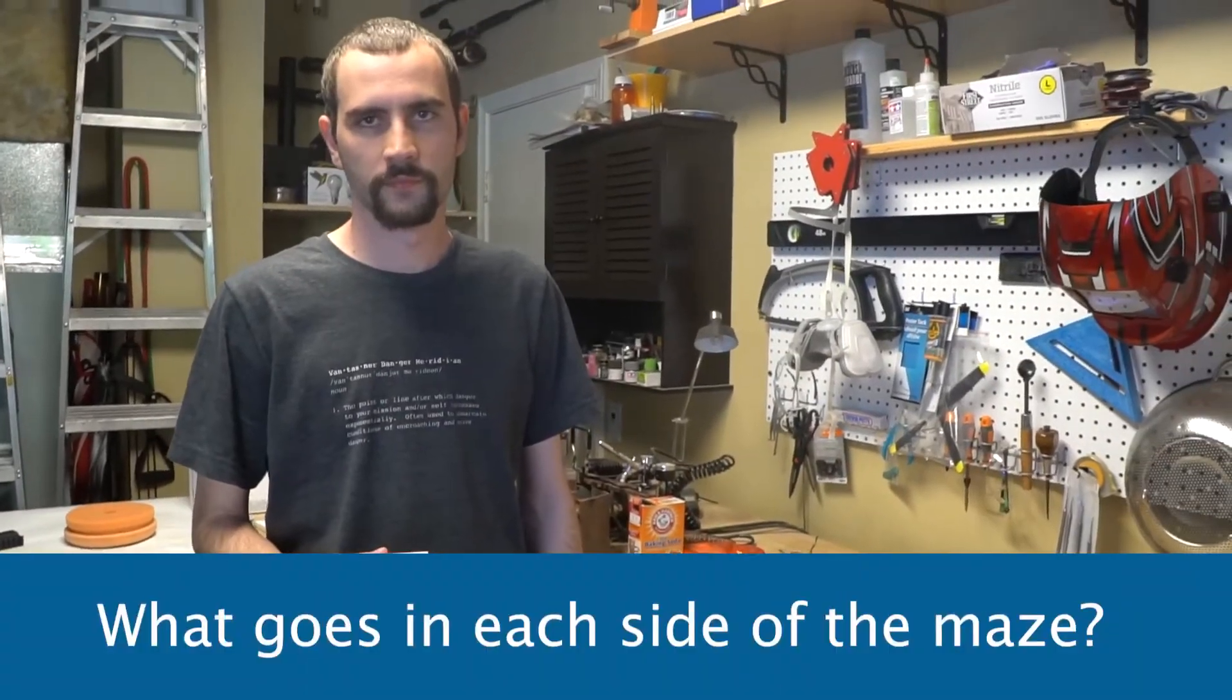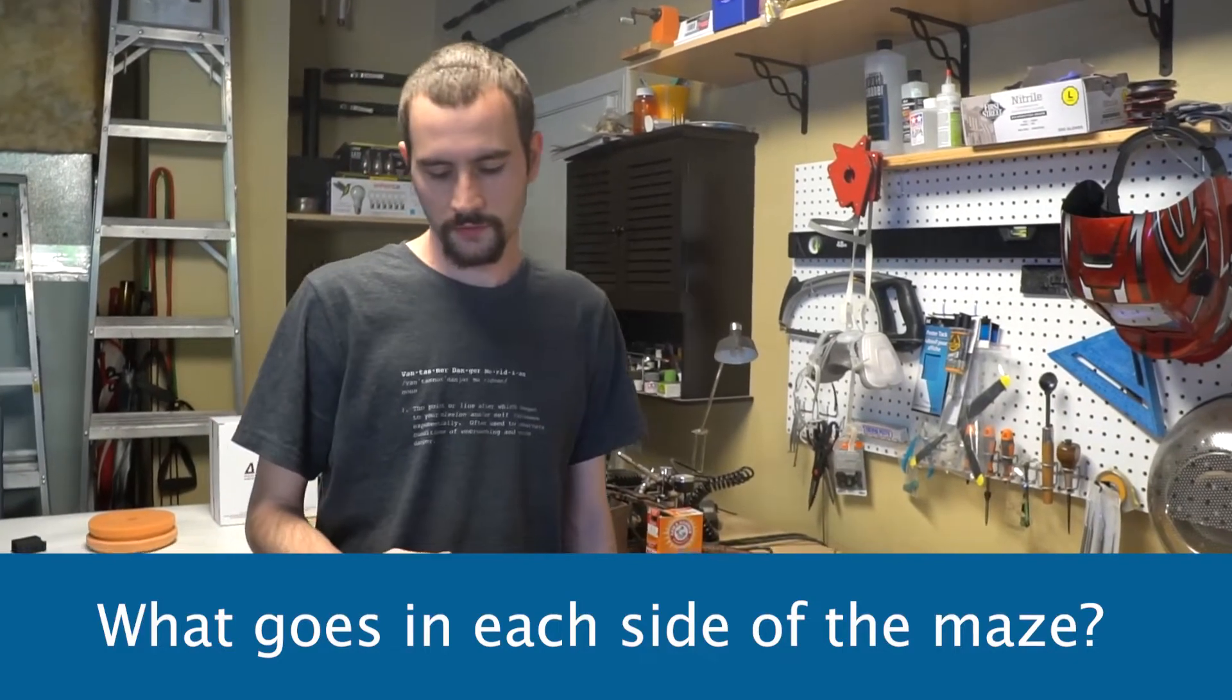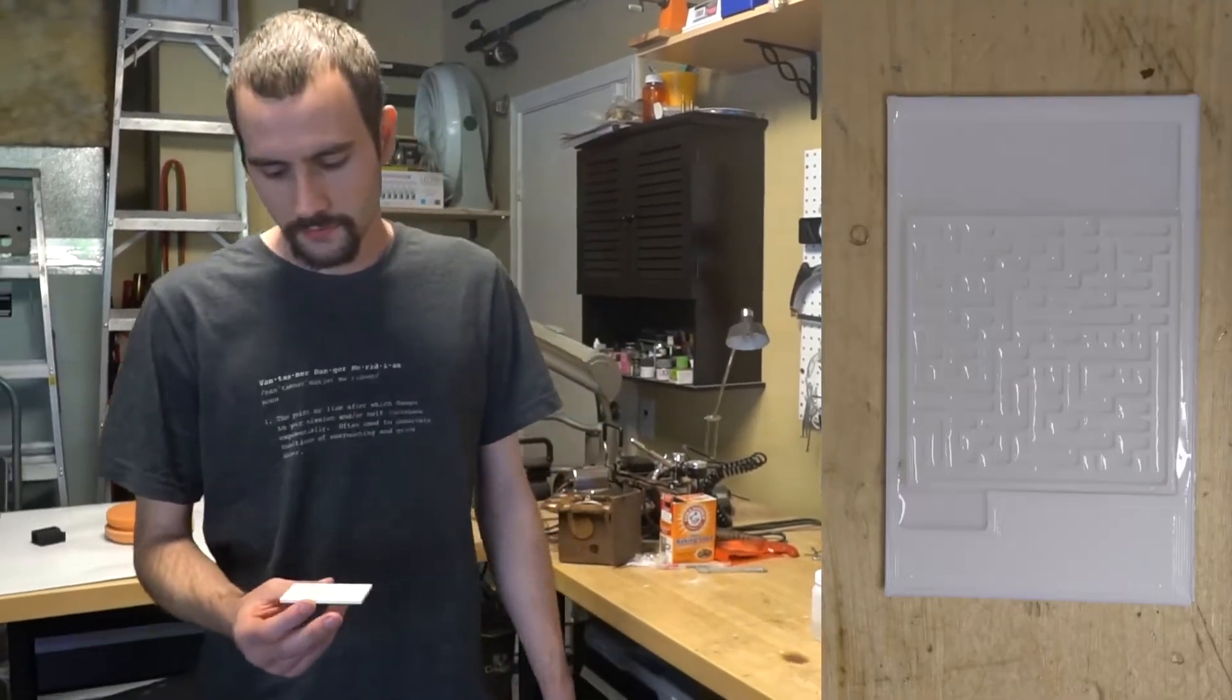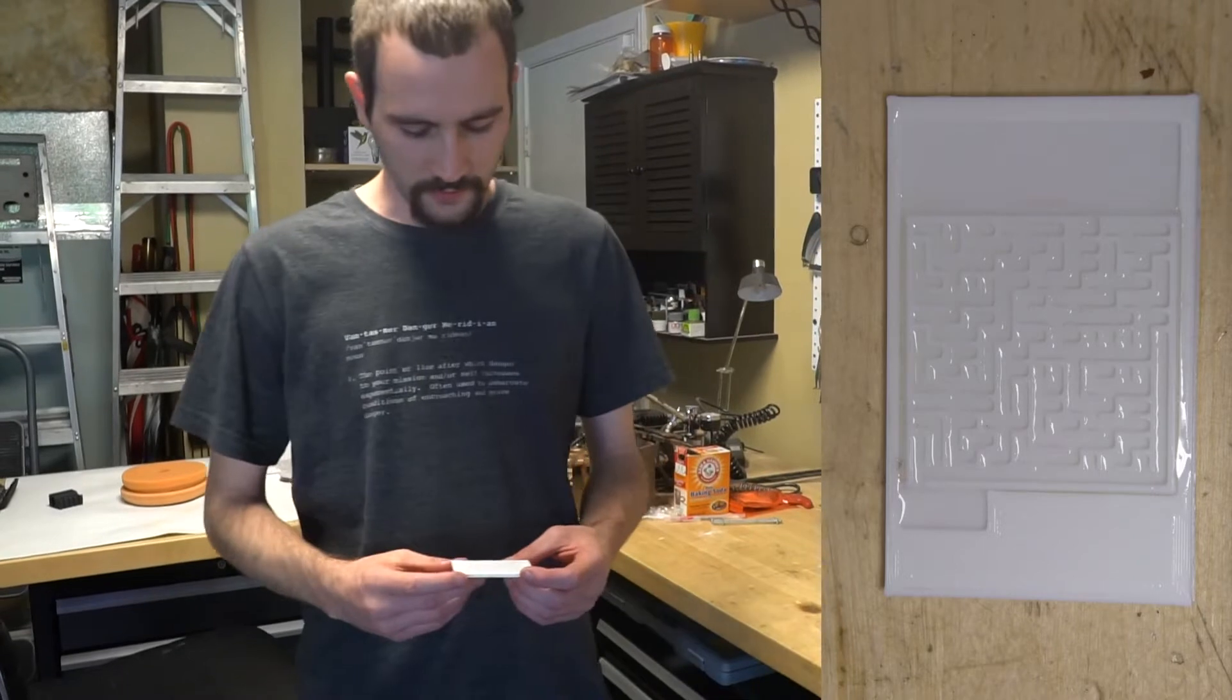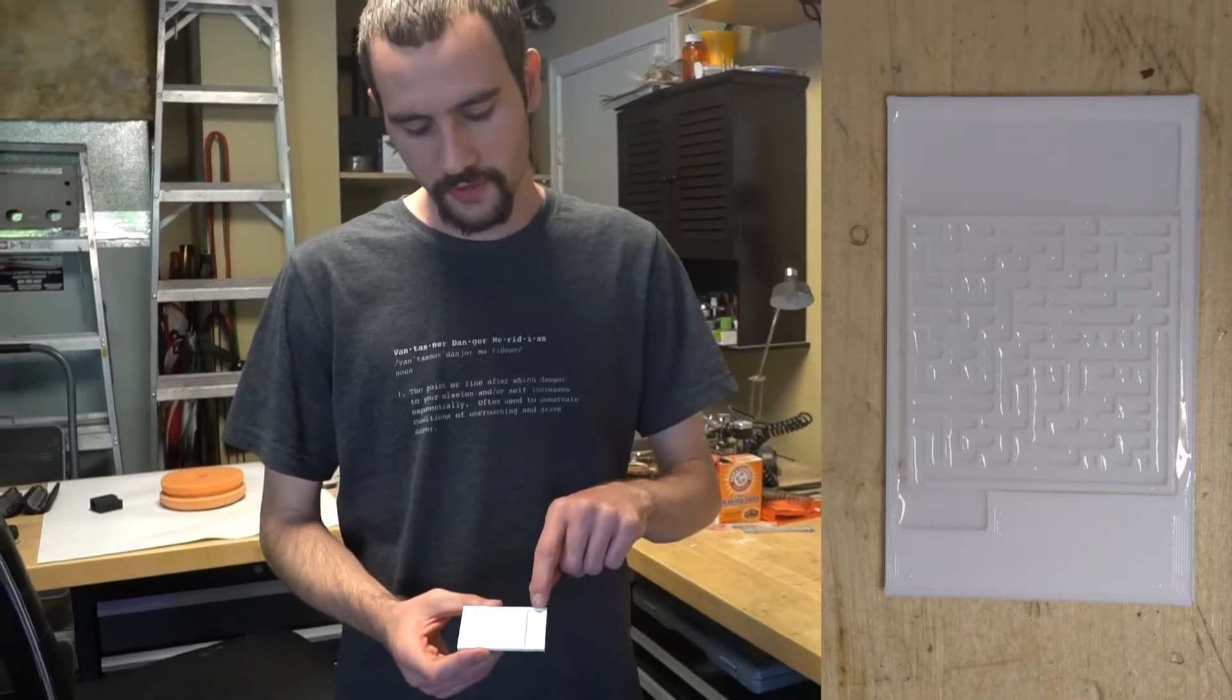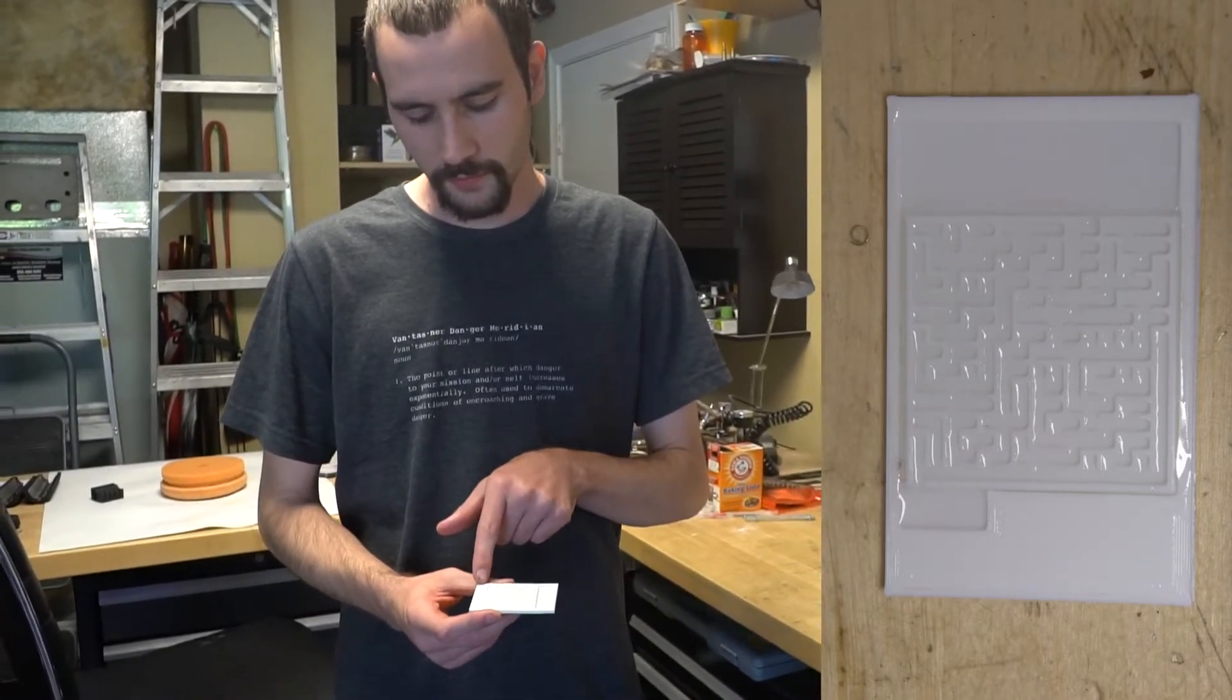So Lawton, tell us a little bit about the two sides of the maze and what goes in each section. Right, so the maze comprises of two main parts. There's a larger cavity here and a very small cavity here.